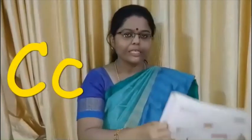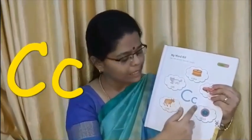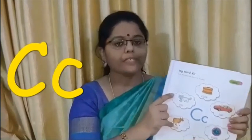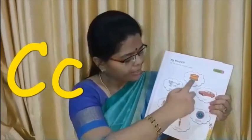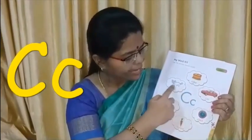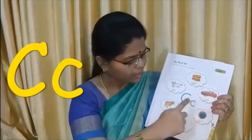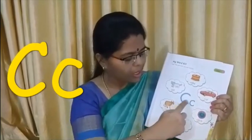Now we will see the sound of C. Okay children, this is capital C and this is small c. The sound of C is 'c'. C — cake. C — cat. C — car. C — cow. C — clock. And C — carrot. So the sound of C is 'c'. What is it, children? C.